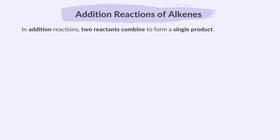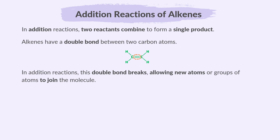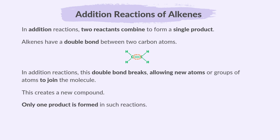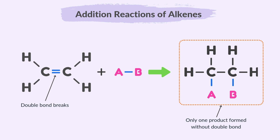In addition reactions, two reactants combine to form a single product. Alkenes have a double bond between two carbon atoms. In addition reactions, this double bond breaks, allowing new atoms or groups of atoms to join the molecule, creating a new compound. Only one product is formed in such reactions. Since the double bond breaks during the reaction, the product will not contain a carbon-carbon double bond.